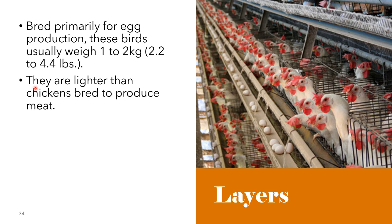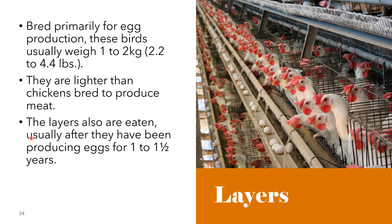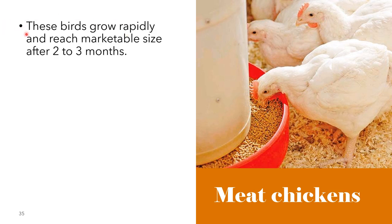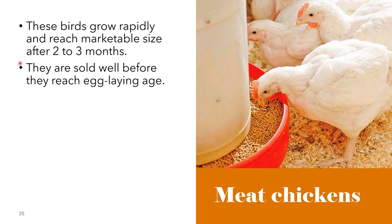The different types of chickens based on purpose include layers. Layers are lighter than chickens bred to produce meat. Because they are smaller, they need less feed to maintain their body weight while laying as many or more eggs than bigger birds. Layers are also eaten usually after they have been producing eggs for one to one and a half years. Farmers often do not keep the males of these breeds because it takes too much feed to bring them to a marketable weight. Birds that lay brown eggs are usually a little larger than those that lay white eggs. Meat chickens are birds that grow rapidly and reach marketable size after two to three months, and are sold well before they reach egg-laying age.